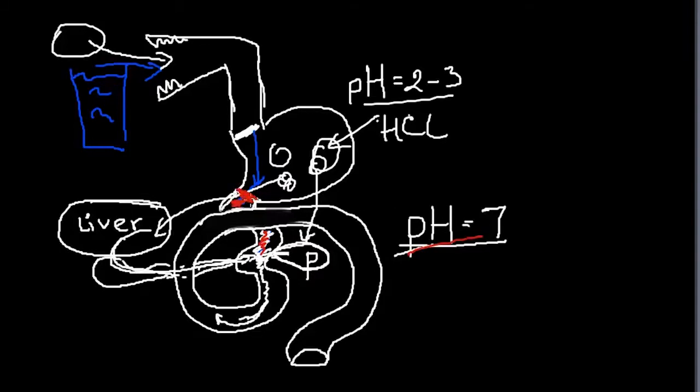As a result, pylorus will remain closed. As a result, food will stay here longer than it's supposed to be in the stomach. As a result, it will have a chance to go through lower esophageal sphincter into the esophagus and create acid reflux there.